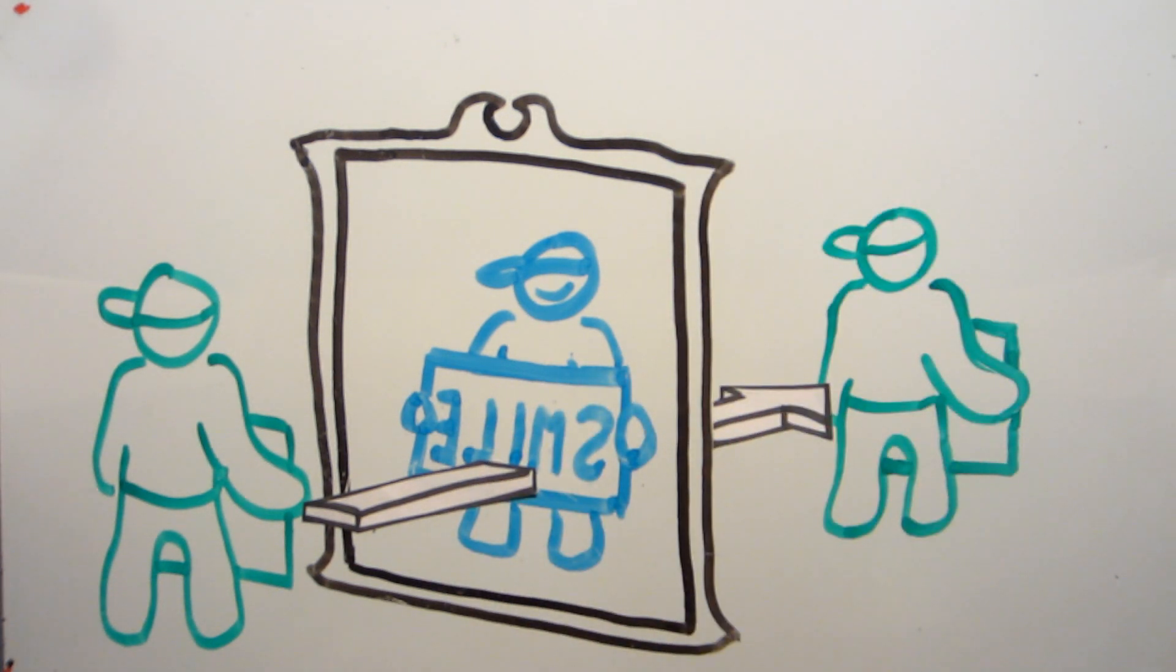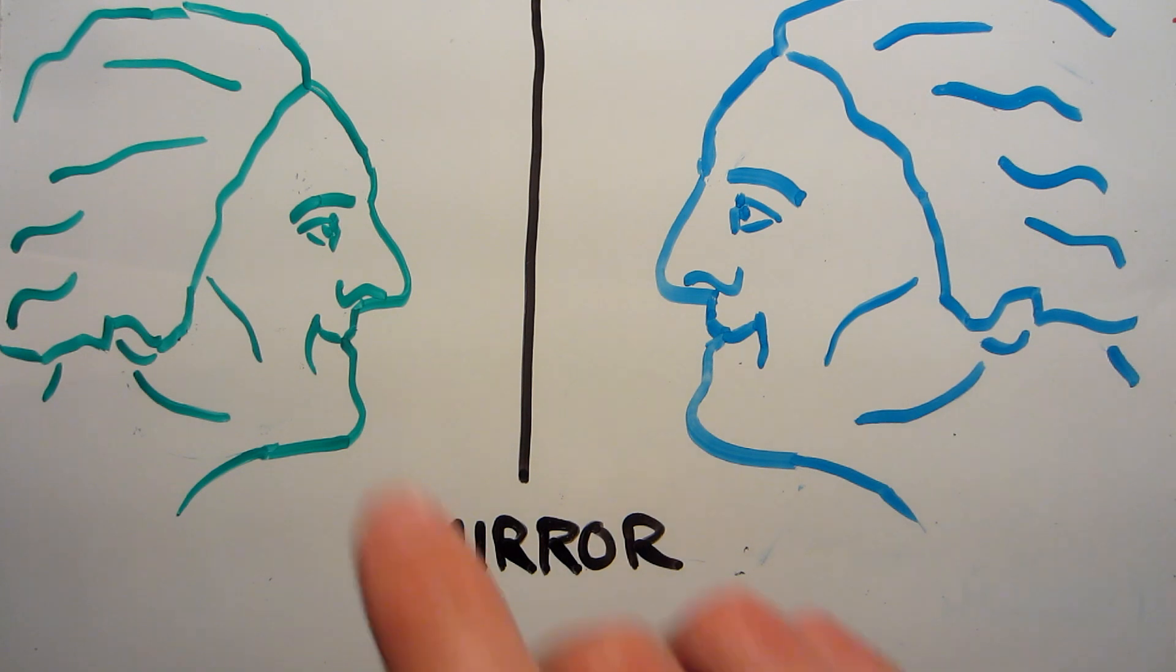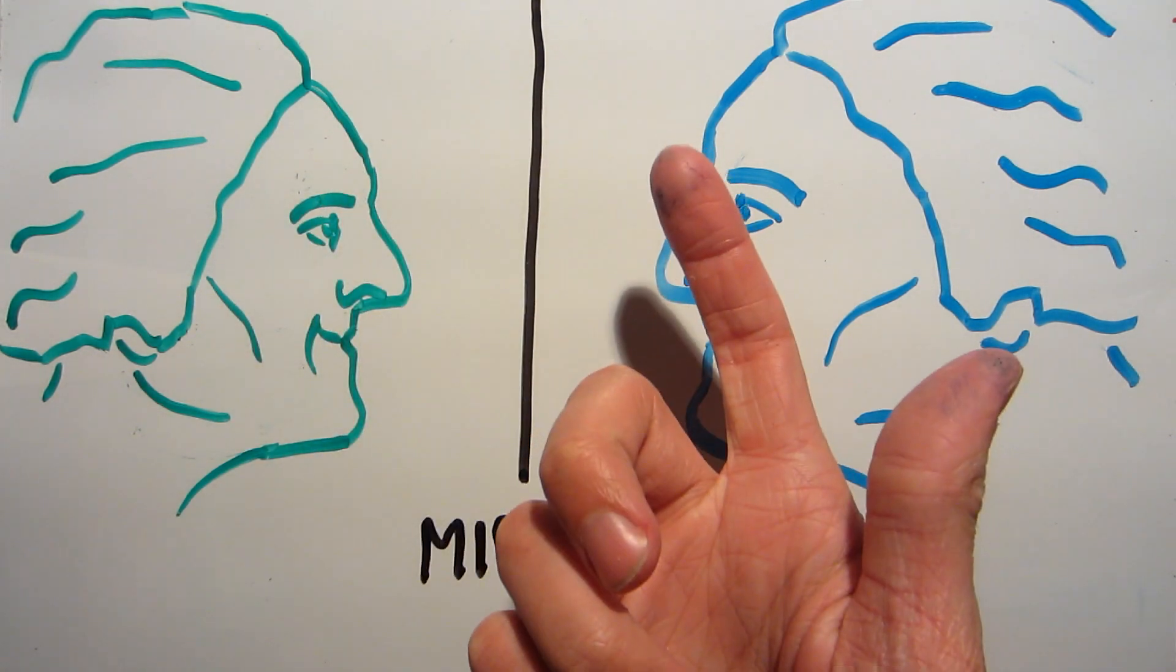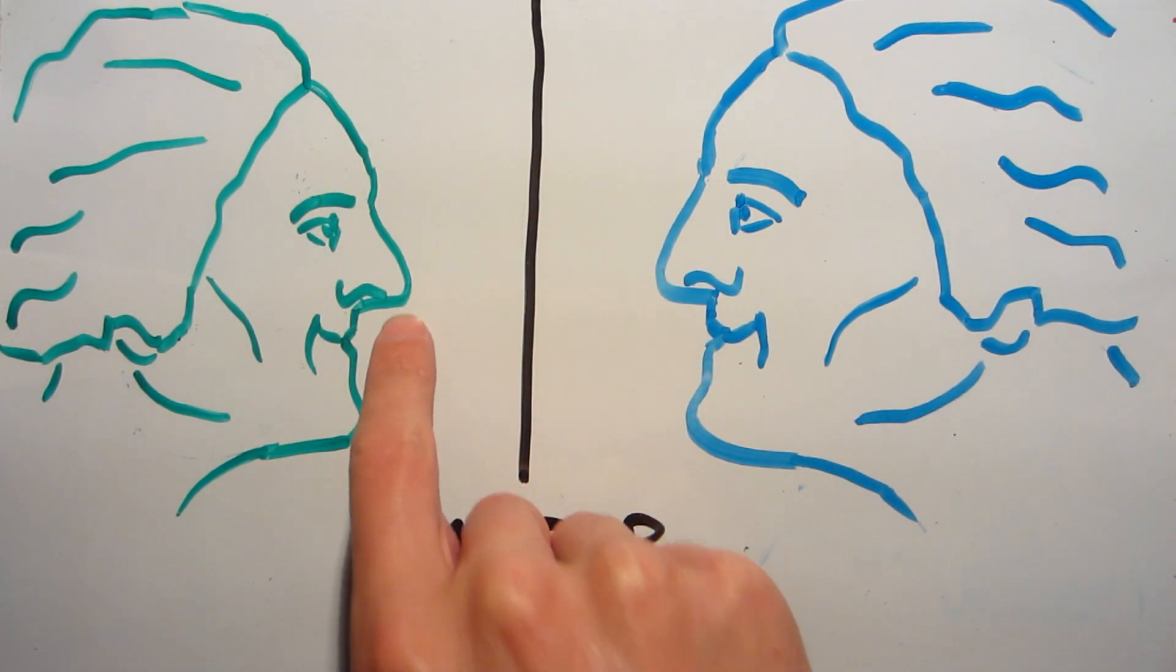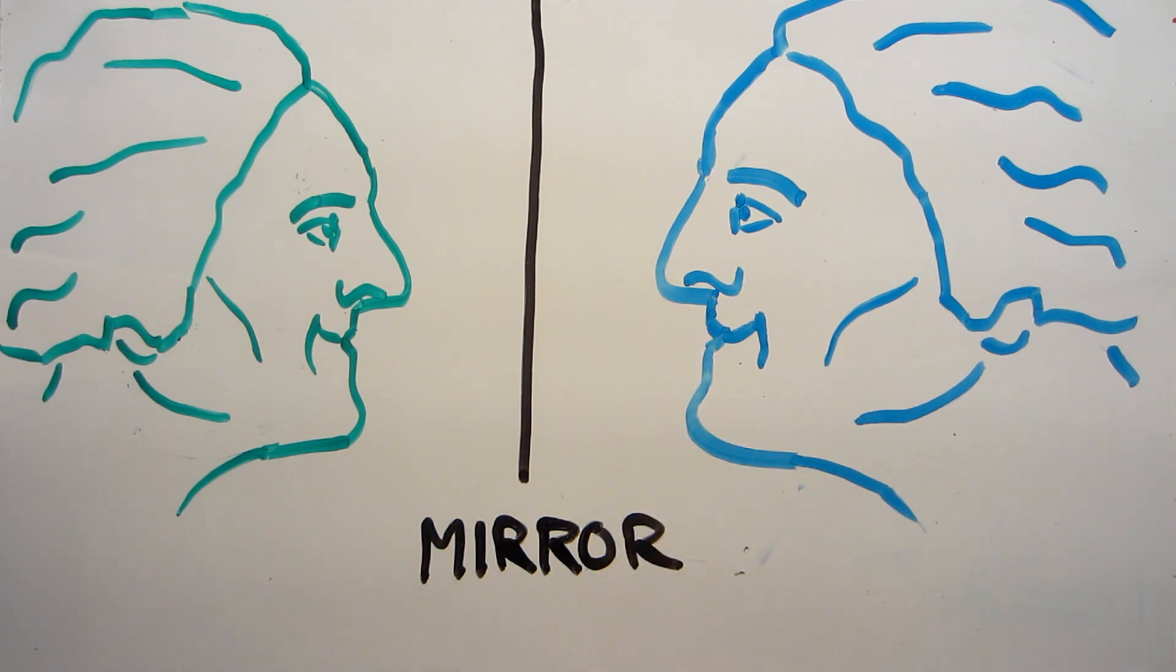This makes perfect sense if you think about how mirrors actually work. All they're doing is reproducing what's in front of them on the other side. Whatever's closest to the mirror in the real world will be closest to it in the image. Whatever's far away will be far away on the other side.